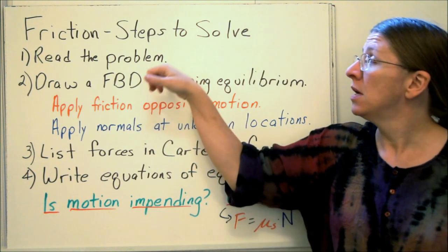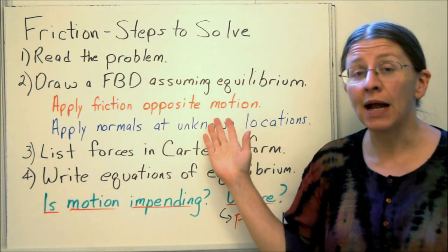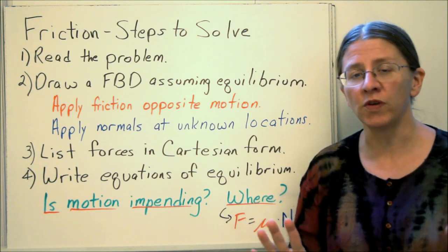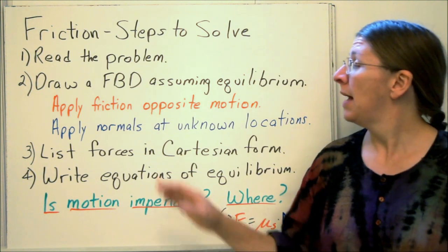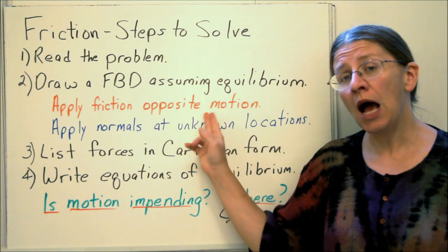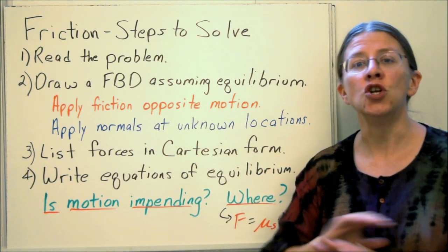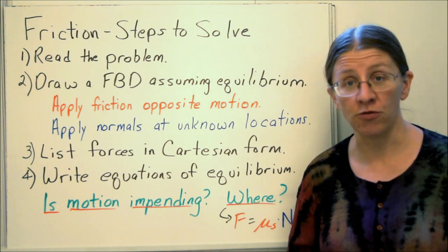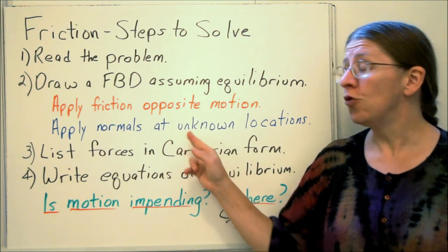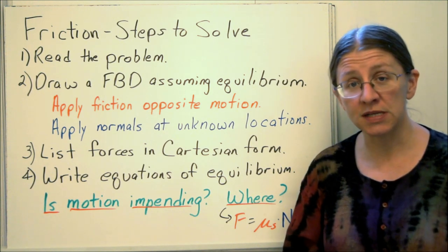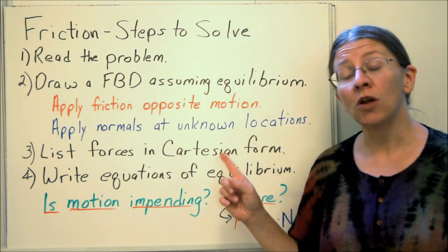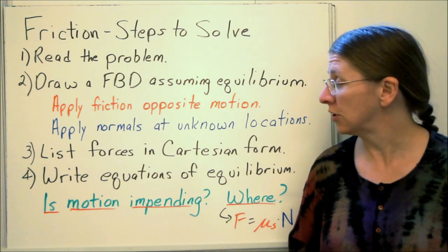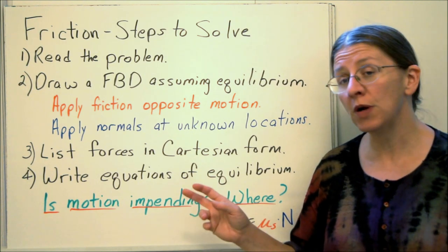What I want to make sure you understand is when you can assume that motion is impending. So our steps to solve friction problems: read the problem, draw a free body diagram, assume equilibrium. So I'm assuming that nothing's moving, or if it's moving it's not going to change its motion. Apply your friction opposite motion. So ask yourself, if there were no friction at all, which way would my object move? Put friction in the other direction. Apply your normal, or whatever normals you have at the different surfaces, at unknown locations. You just don't know where they're going to act, put them at some sort of x location. List your forces in Cartesian form, write your equations with equilibrium.